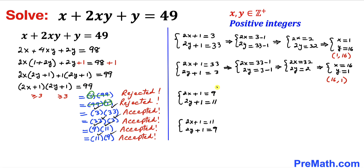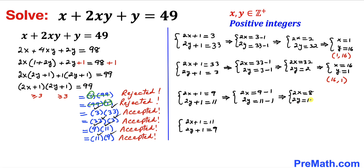For the next system, we move 1 to the right hand side and subtract, giving us 2x equals 8 and 2y equals 10. Dividing both sides by 2, we get x equals 4 and y equals 5, so the solution for this scenario is (4, 5).